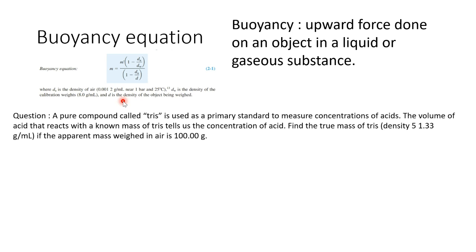Here's the first question: A pure compound called tris is used as a primary standard to measure concentration of acid. The volume of acid that reacts with known mass of tris tells us the concentration of the acid. Find the true mass of tris with a given density if the apparent mass weighted in air is 100 grams. Set up what you're given. Tris is your known compound, so this is not going to be the dA because it's not air, nor water. We know this is going to be your dO.